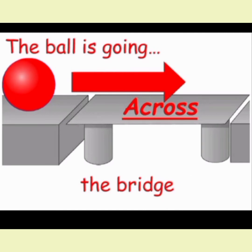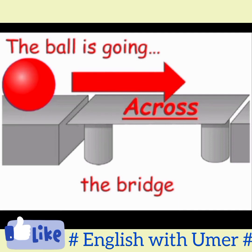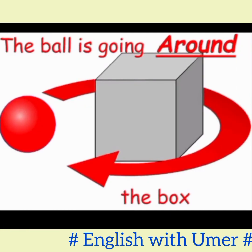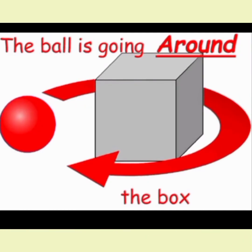Next: across. The ball is going across the bridge — aap dekh saktay hain ball ko across the bridge. Here we use 'across' as a preposition. Next: around. The ball is going around the box — kuch cheez irdh-girdh ghoom rahi ho, we use 'around.'